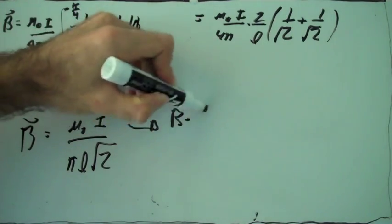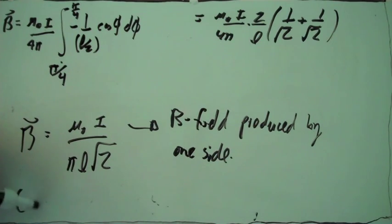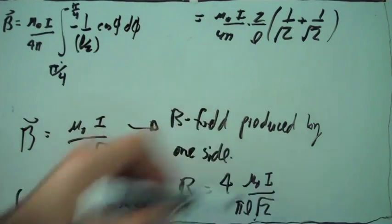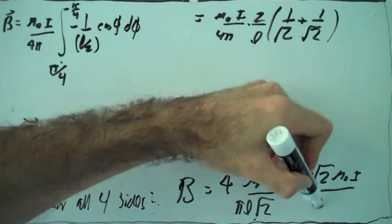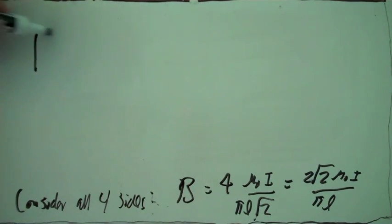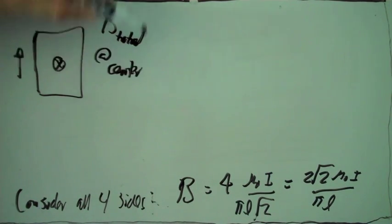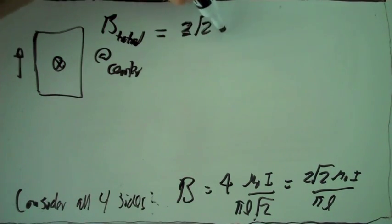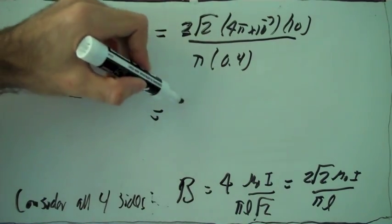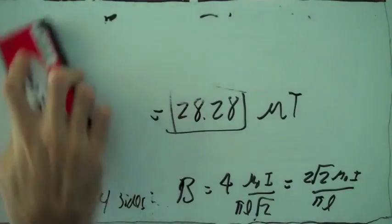That's only the magnetic field produced by one side of the square loop. If we want the magnetic field produced by the whole square loop, we have to multiply by 4 to consider all four sides. So the total magnetic field is 4 times that, which simplifies to a compact expression. Now plugging in numbers: mu-naught, current equals 10 A, length L equals 0.4 m. We get the magnetic field at the center of the square loop in micro-teslas.